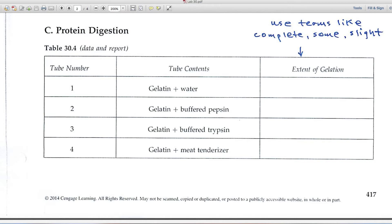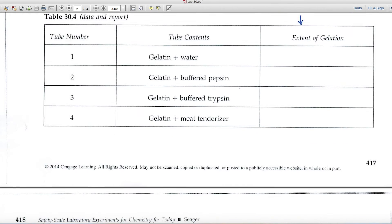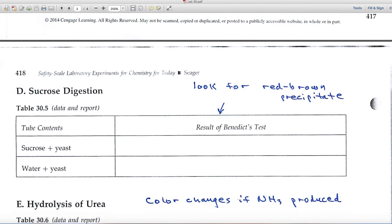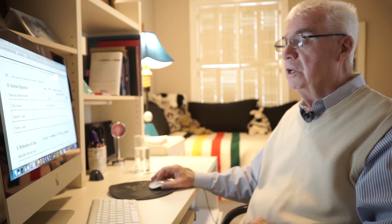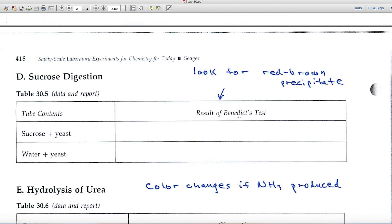Part D: sucrose digestion. Well, you know that sucrose is comprised of fructose and glucose, and so if sucrose is broken apart, you'd get those two monosaccharides, either of which can give a positive Benedict test, which is a red-brown precipitate. So that's what you'll be looking for in those photos.